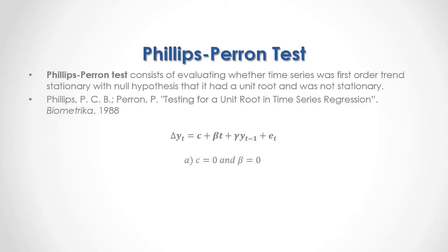We then have three options. Option A: constant equals 0 and beta equals 0, therefore the Phillips-Perron test without a constant and without a trend variable. Option B: constant different to 0 and beta equals 0, therefore the Phillips-Perron test with a constant but without a trend variable. Option C: constant different to 0 and beta different to 0, therefore the Phillips-Perron test with a constant and with a trend variable.